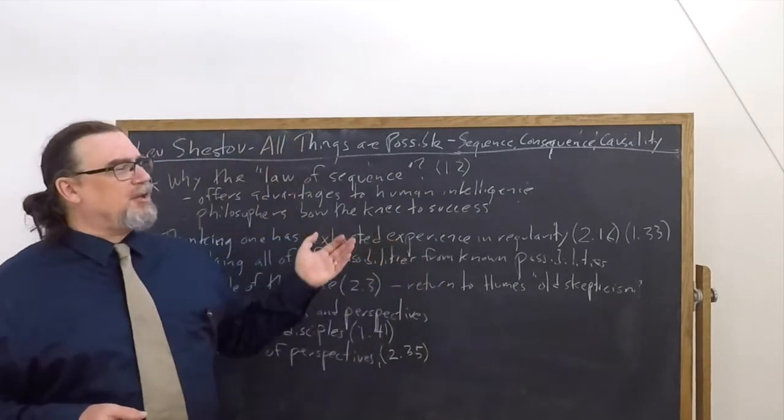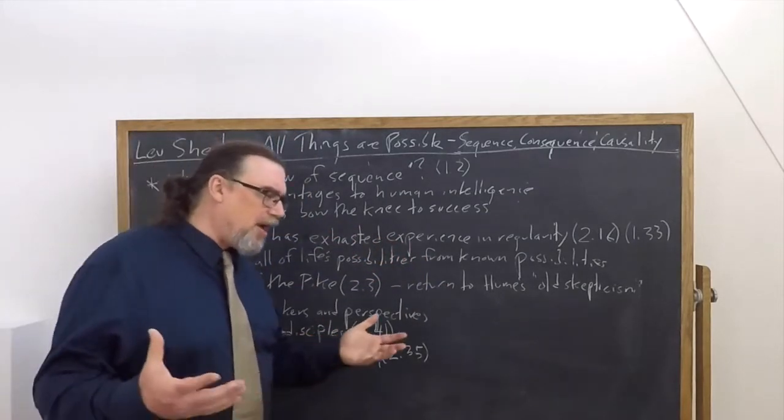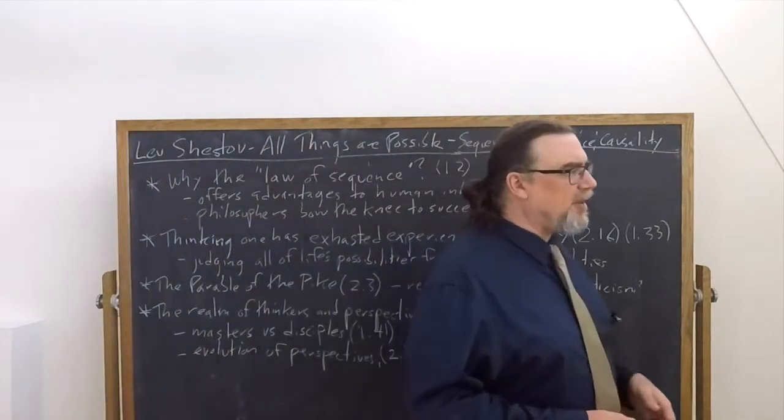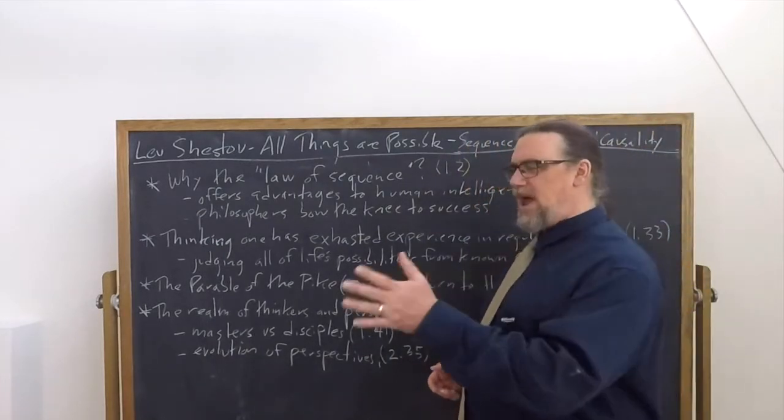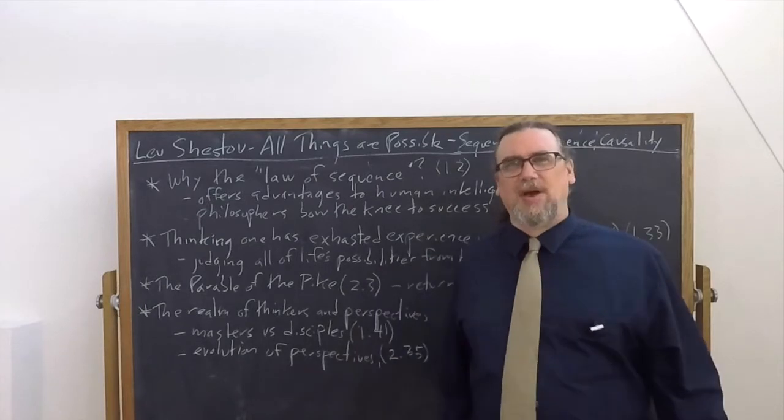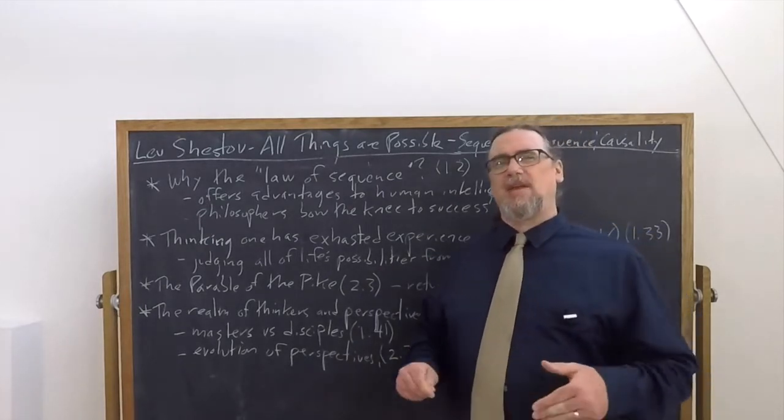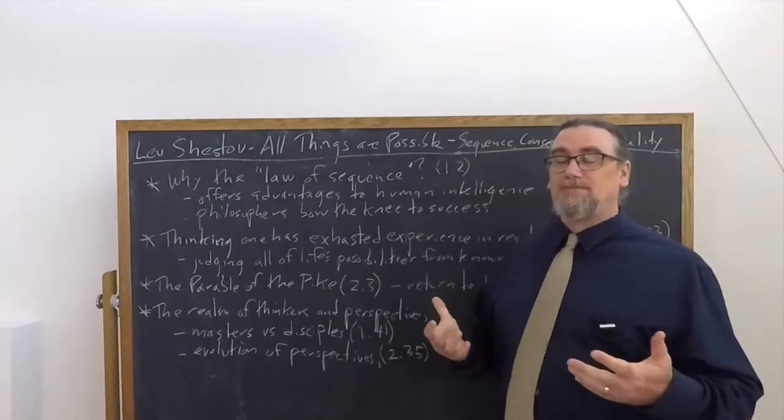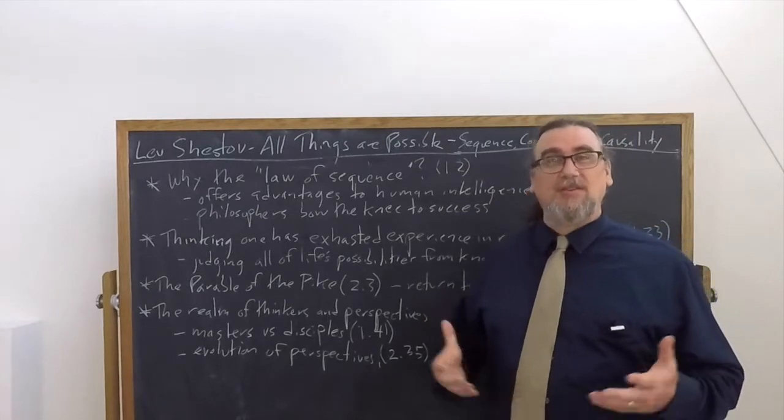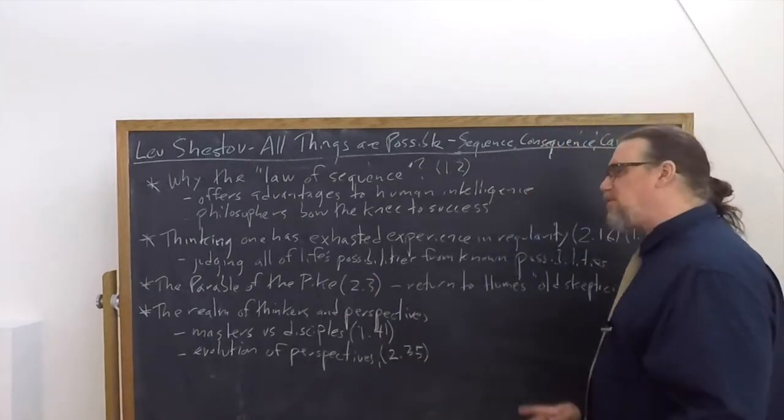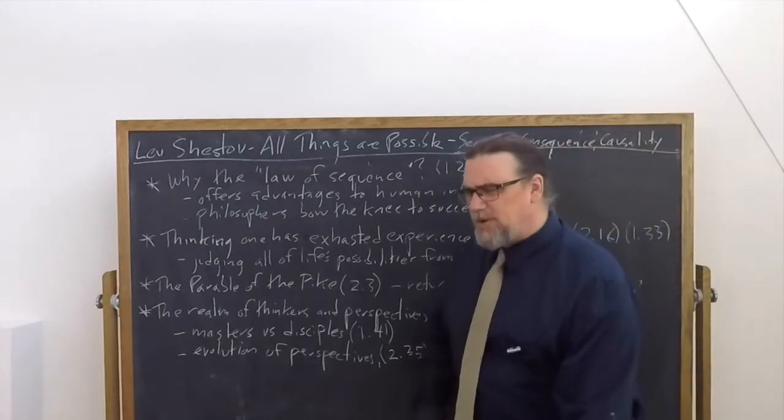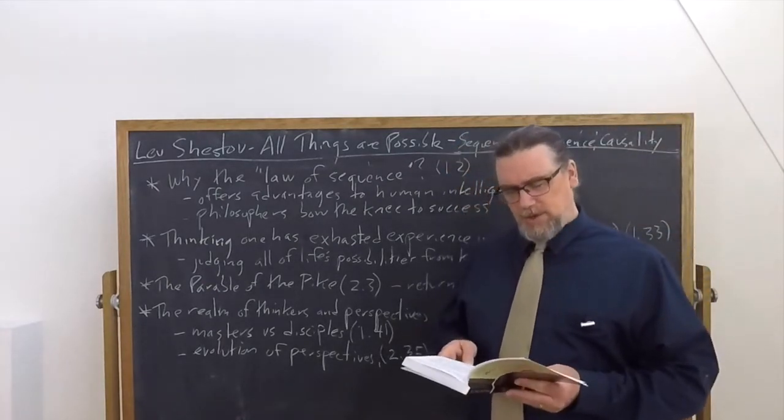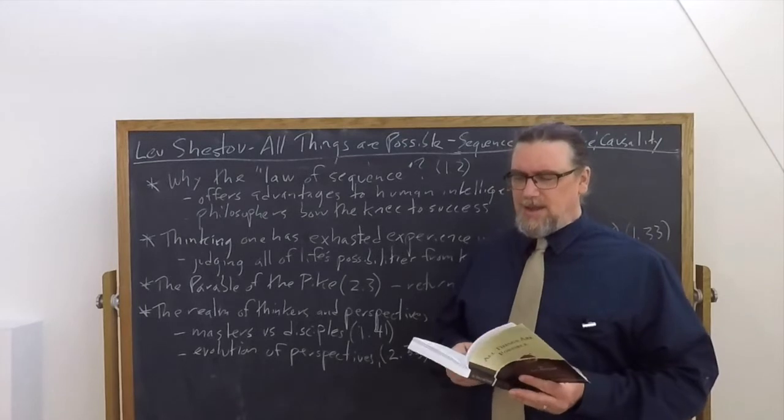But understandable because philosophers like other human beings like what seems to be successful. And if we look at the history of philosophy, we see all sorts of ideas adopted throughout the ages, even down to the present, which are much more convenient or satisfying emotional needs than necessarily true. Or they're just part of the general culture. And so this helps to explain why we're so big on this.